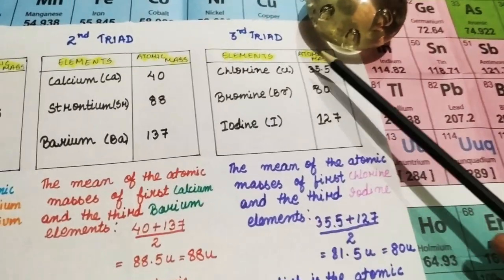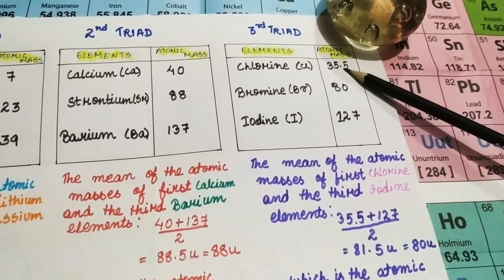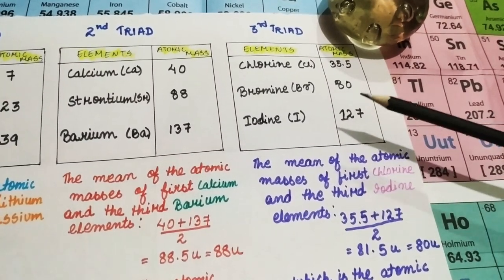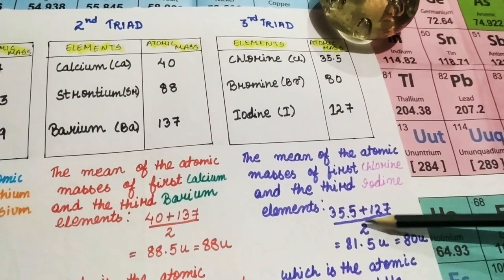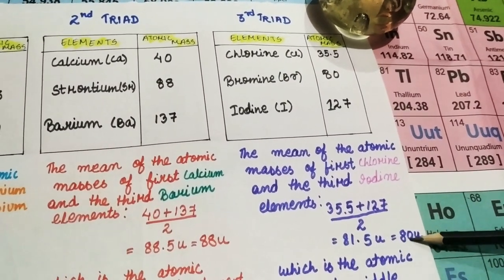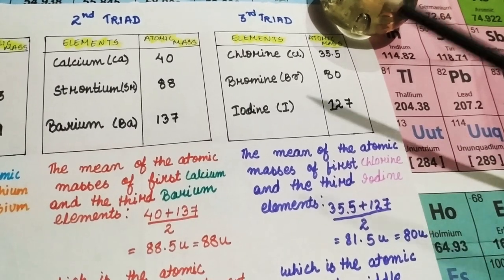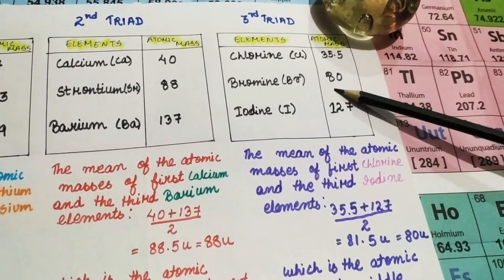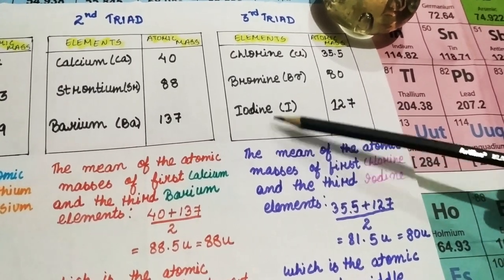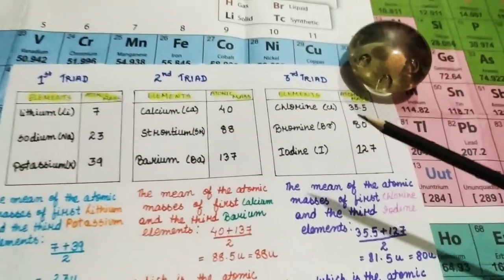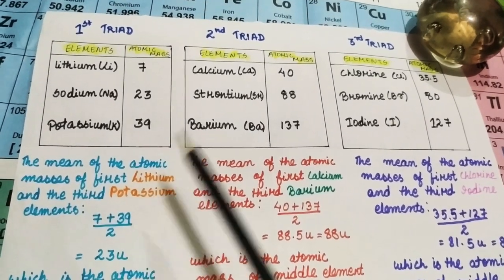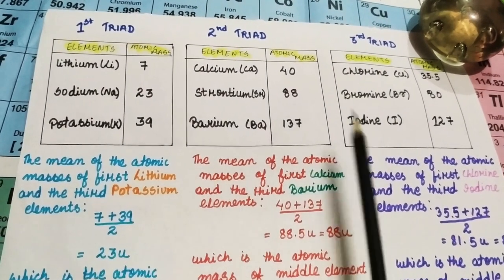In his third triad, we can see that the atomic mass of chlorine is 35.5 and the atomic mass of iodine is 127. When we add these two numbers and divide it by 2, we get 81.5, which on average can be taken as 80. And see, the atomic mass of the middle element, that is bromine, is 80. His rule is valid in this triad too. So, we can give it a green tick. These are the three triads which he have given and his statement is matching with the three triads.